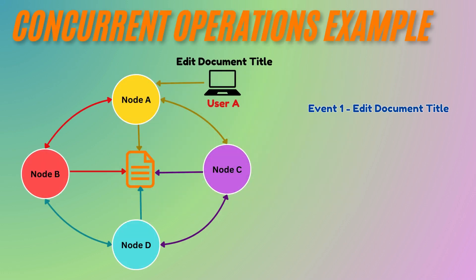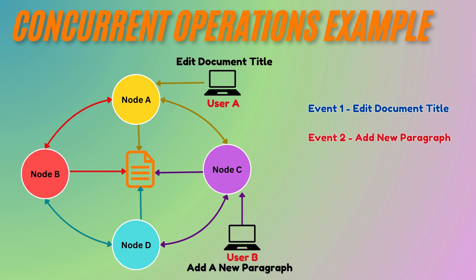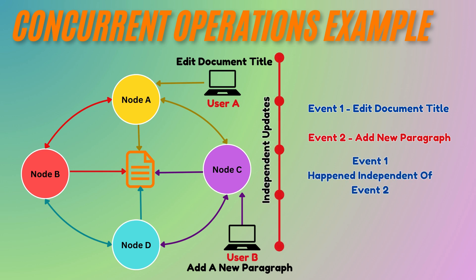Now consider another scenario where both User A and User B open the same document and start editing simultaneously, without knowledge of each other's actions. User A edits the document's title while User B adds a new paragraph. Since these edits happen independently — neither user is aware of the other's change when they make their own — they are considered concurrent. There is no causal relationship between the two changes.